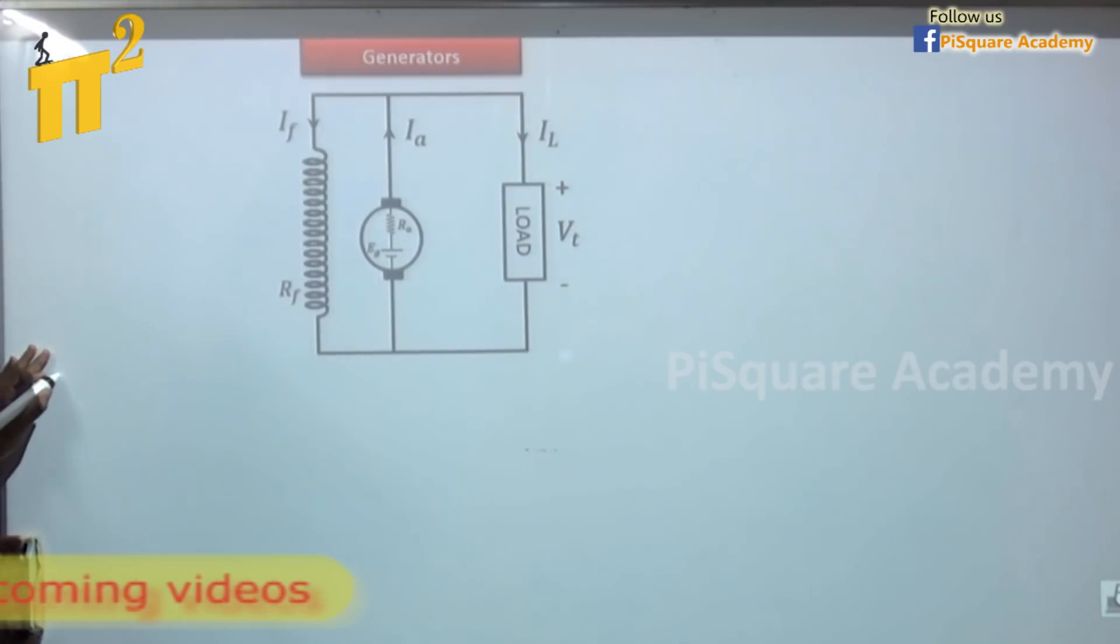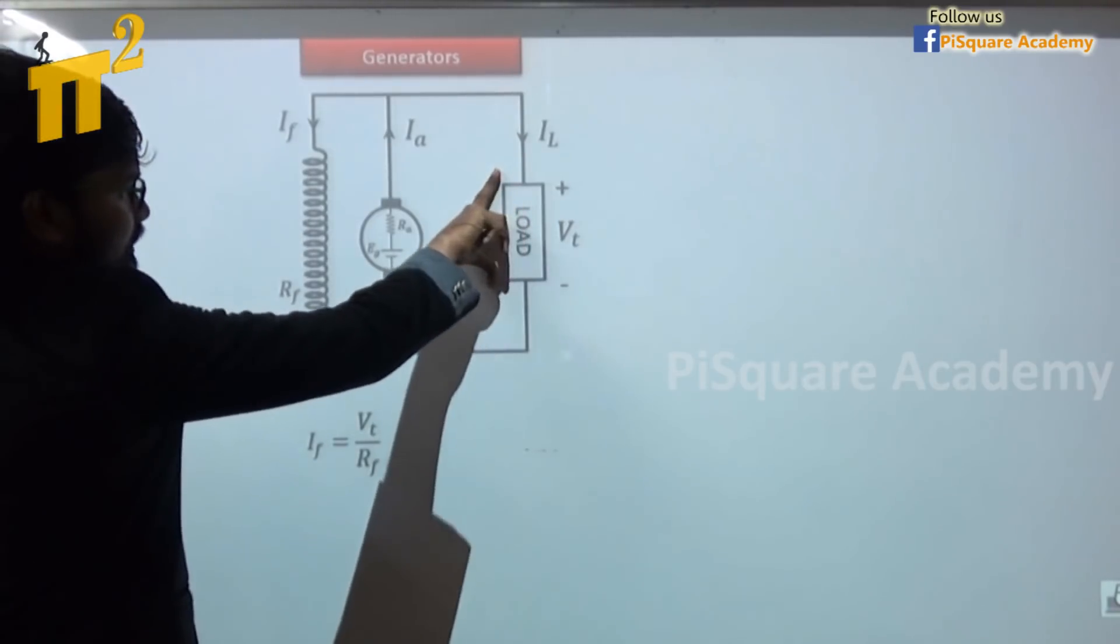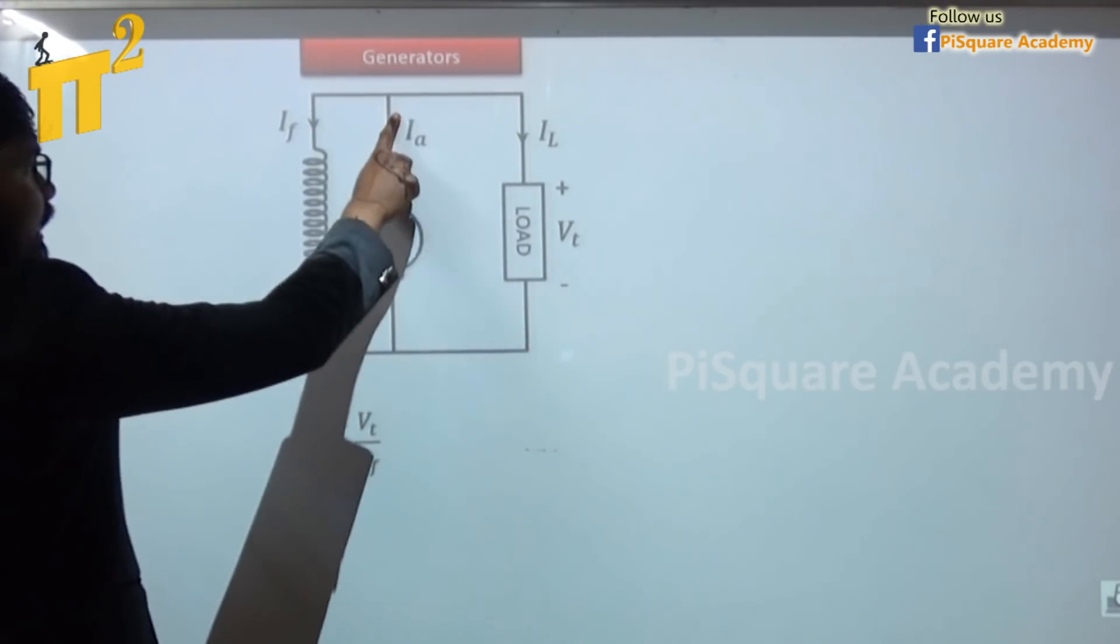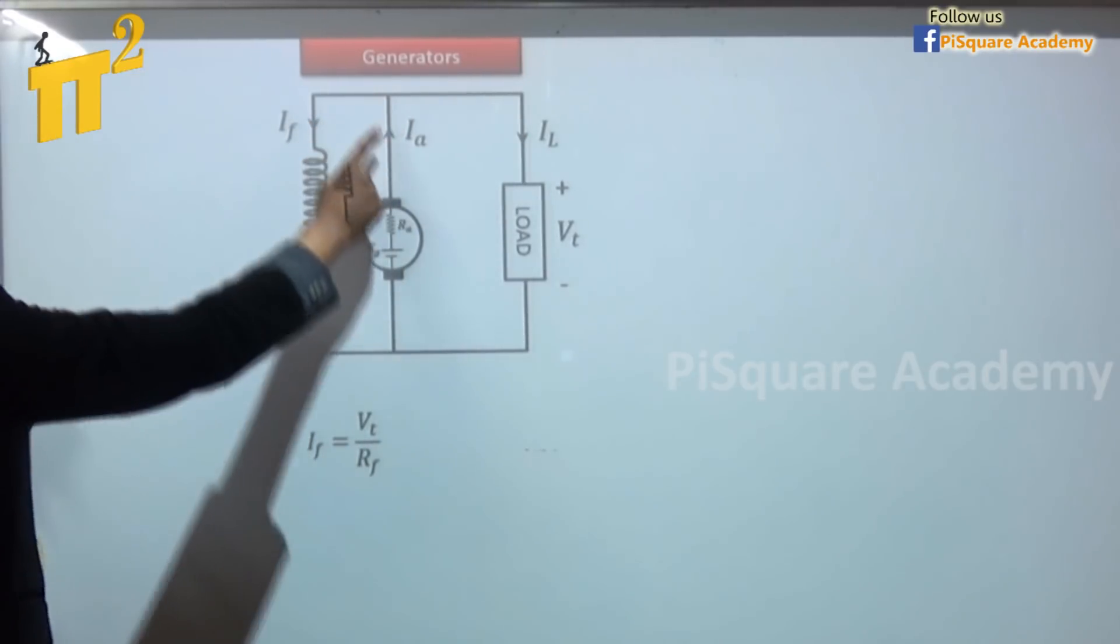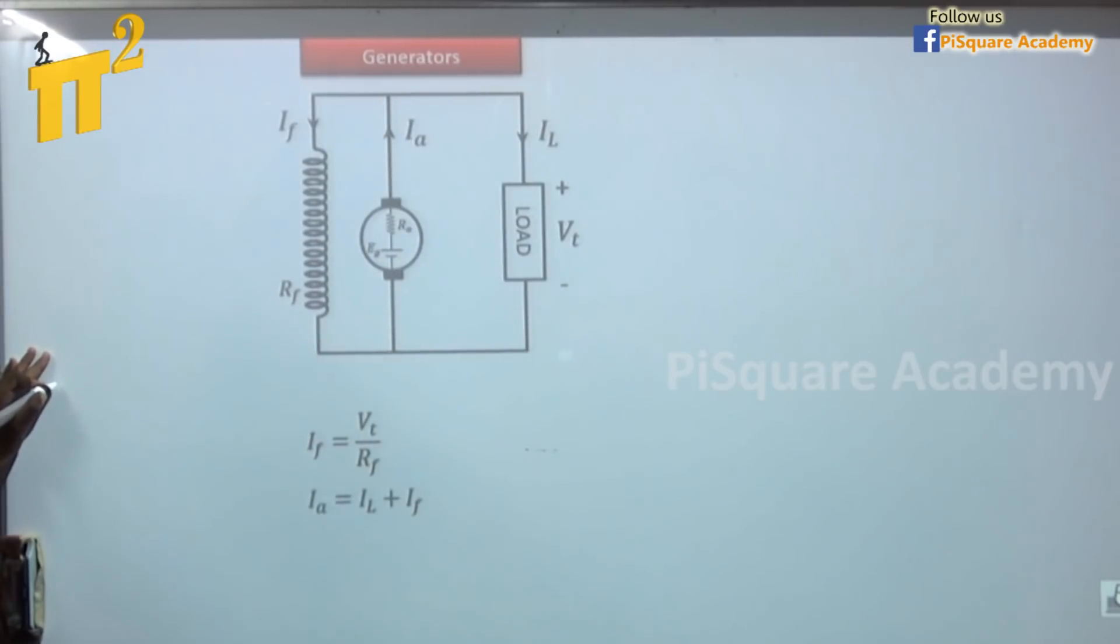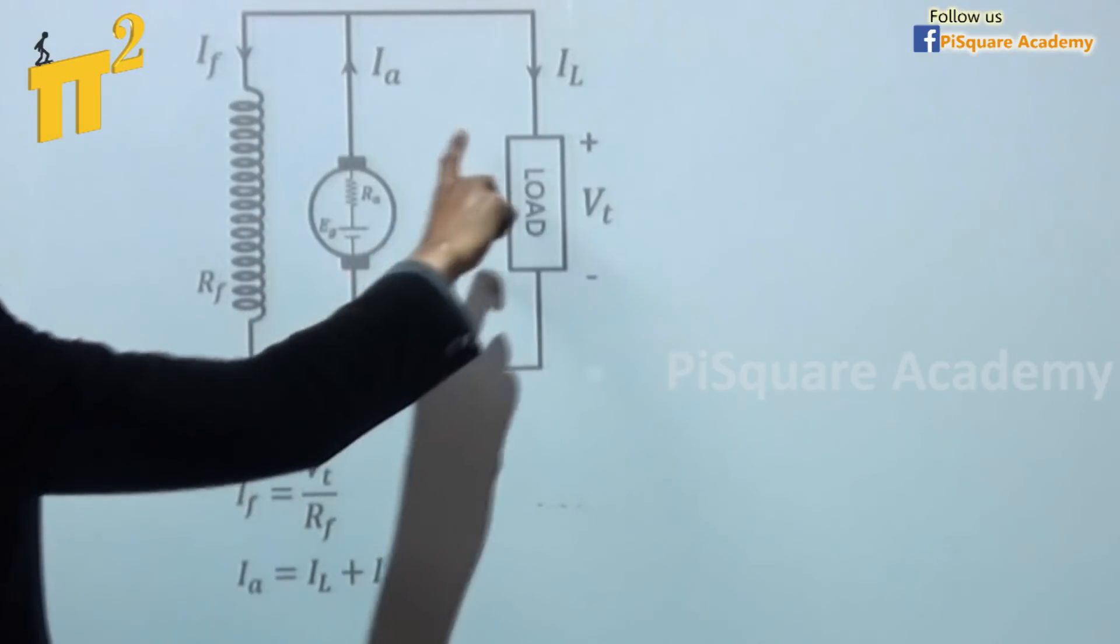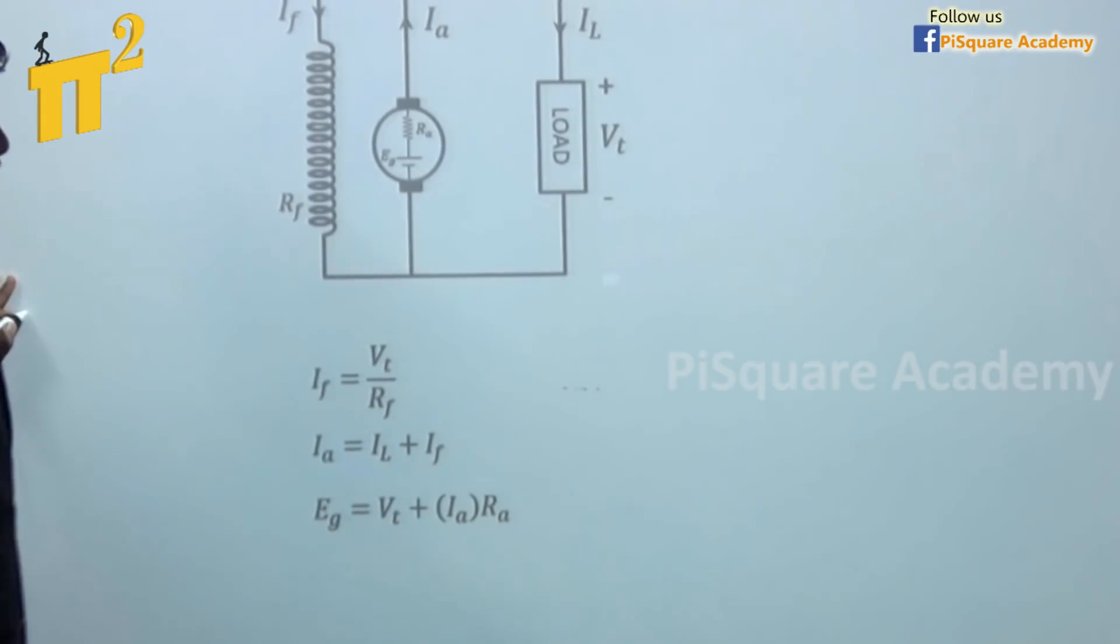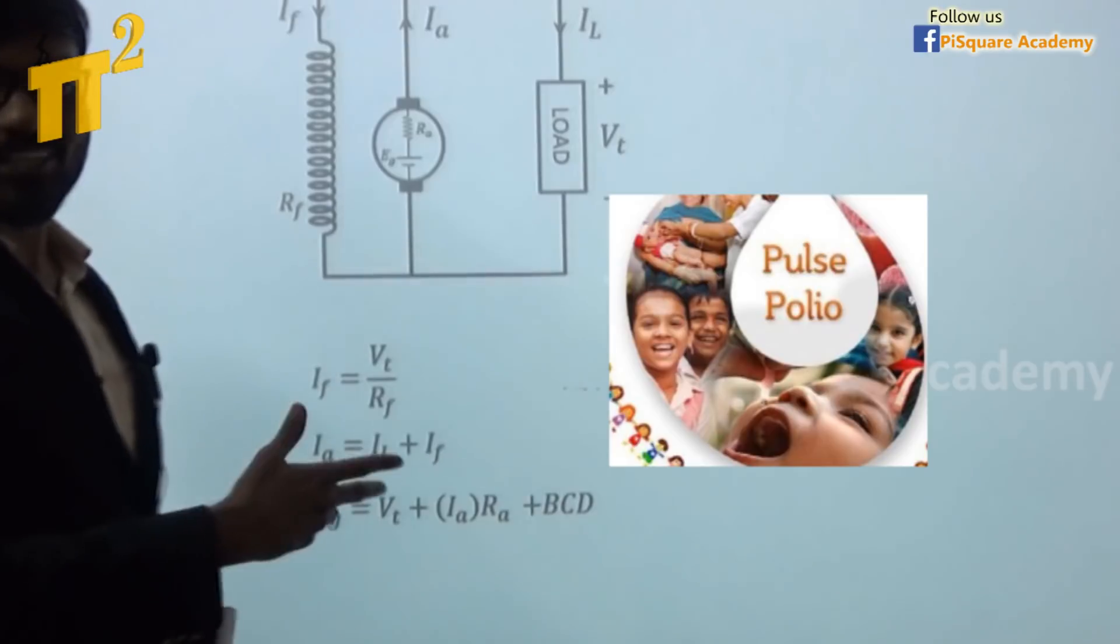Corresponding voltage and current equation - you can see here. If is equal to terminal voltage, this voltage is applied across this, Vt by Rf. And Ia is equal to If plus Il, simple KCL at this node. Sum of incoming current is equal to sum of outgoing current. Then Eg is equal to whatever Eg generated here, that will appear across the node after some drops. Those drops are Ia*Ra drop as well as BCD. It is voltage drop.